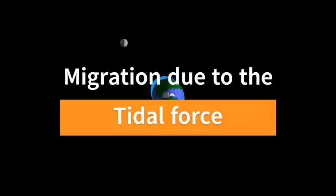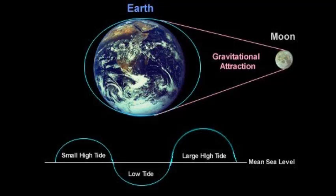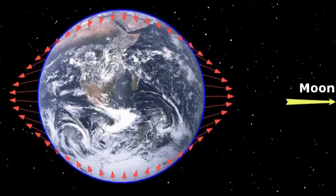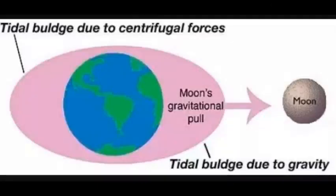How is this movement happening? The movement is mainly due to the tidal force. Let me quickly explain what it is. The gravitational force applied by the moon on the Earth is called tidal force, and this causes the movement of the oceans to form a tidal bulge.